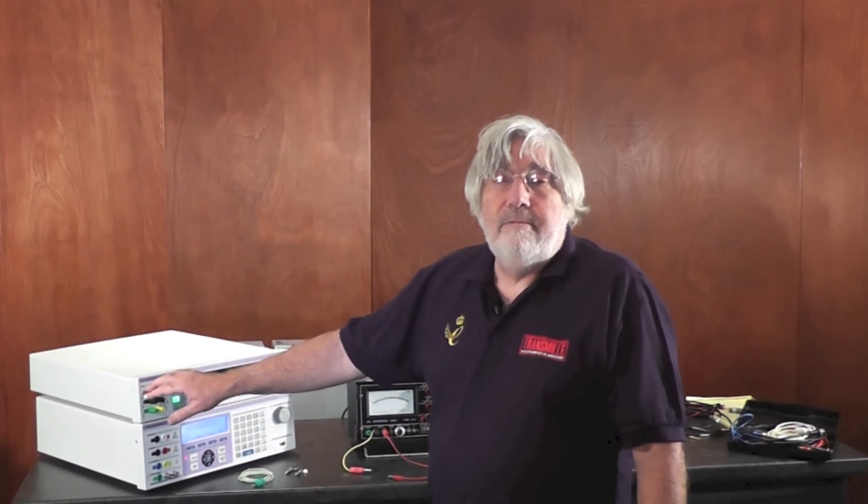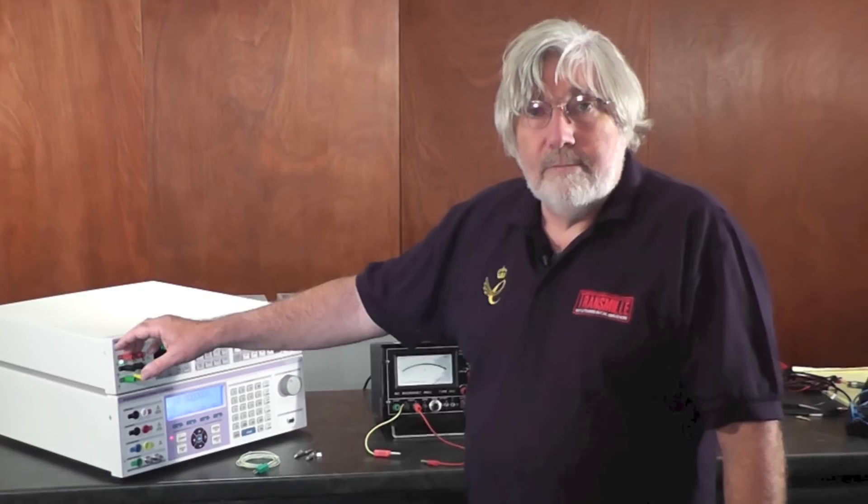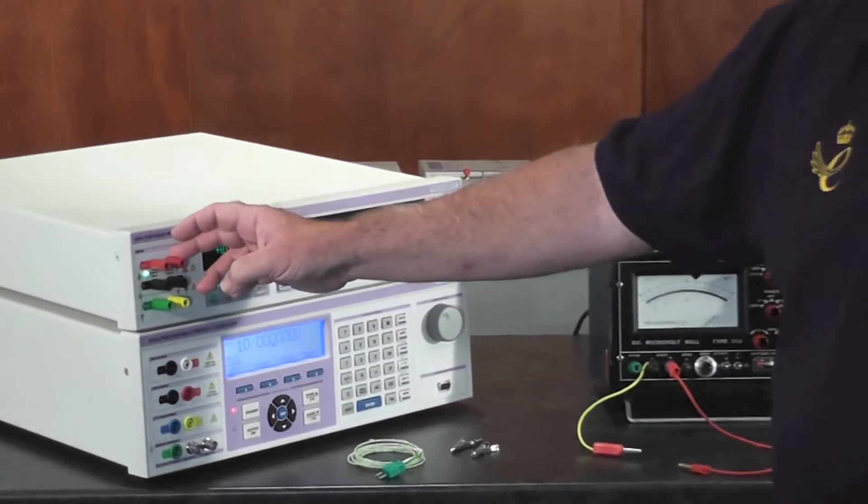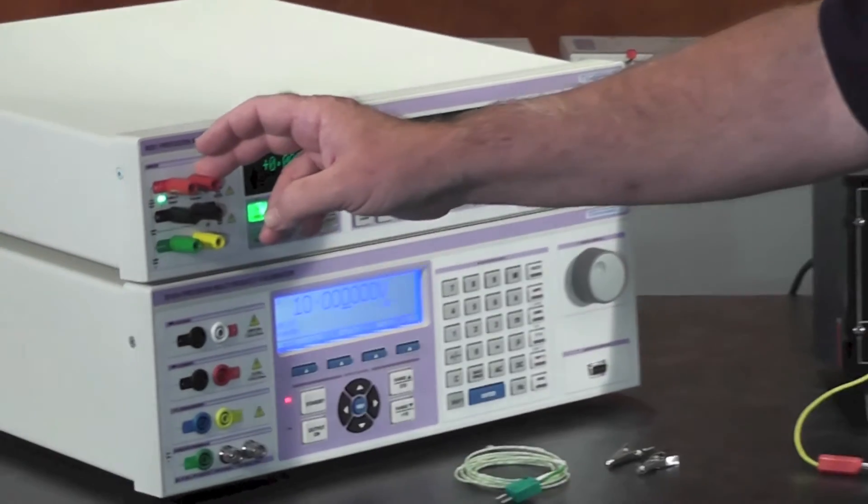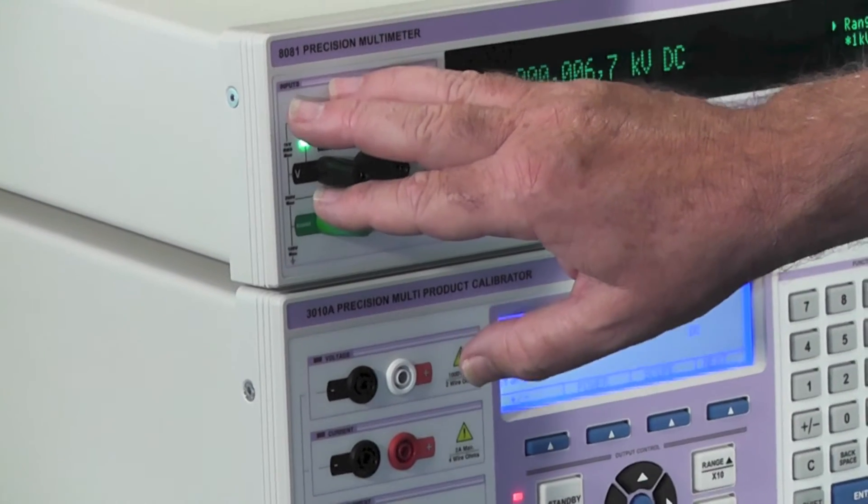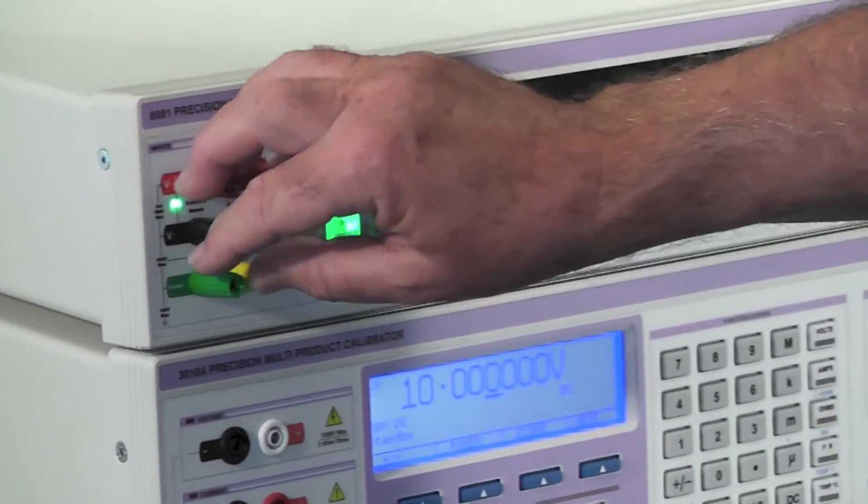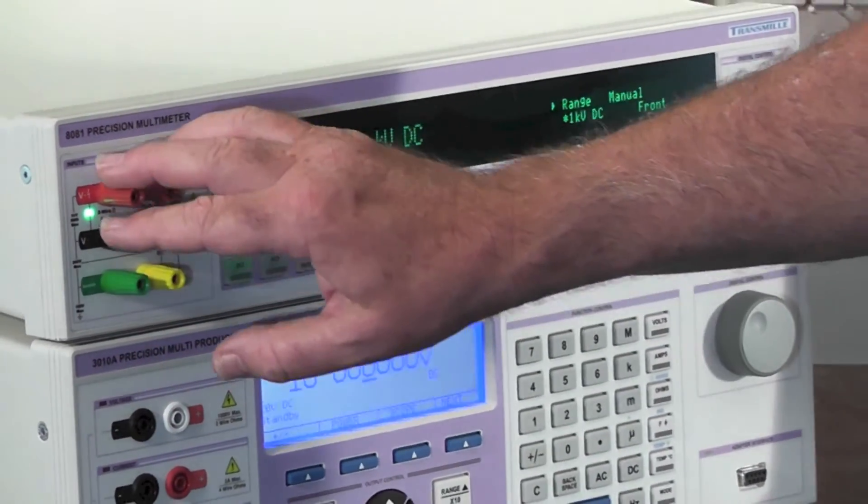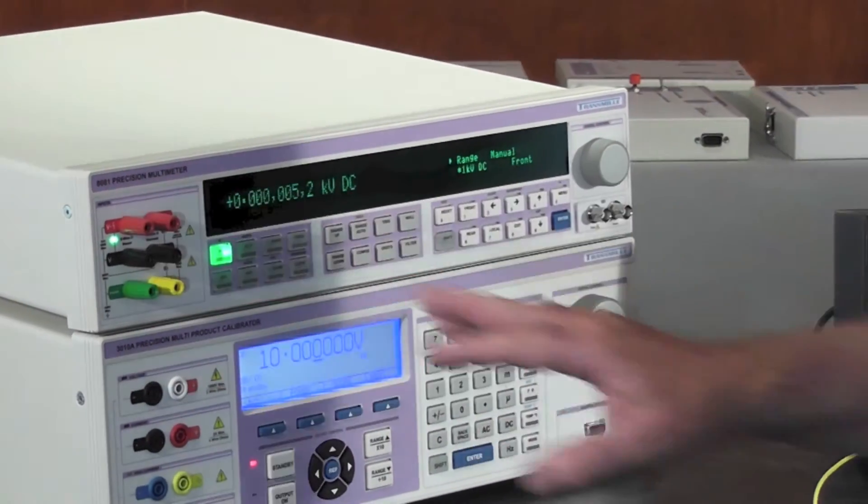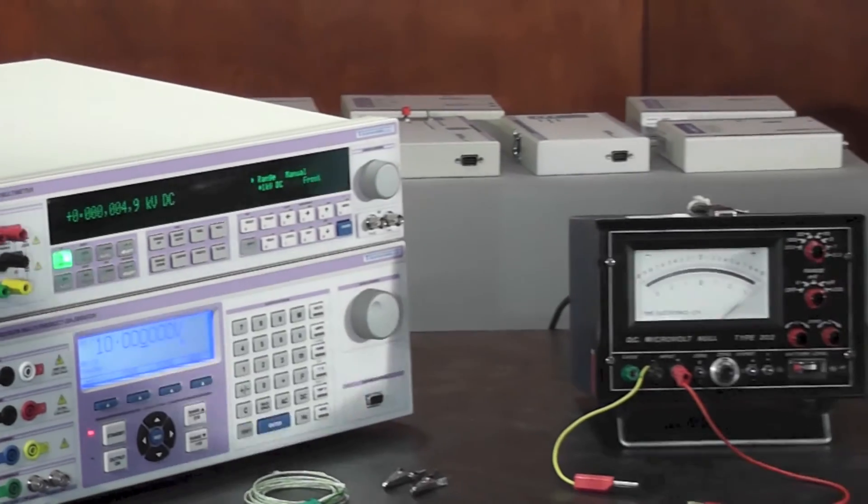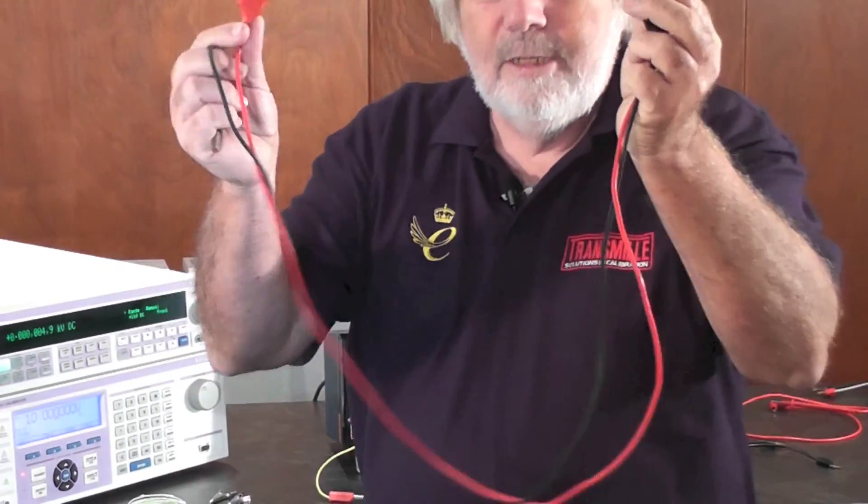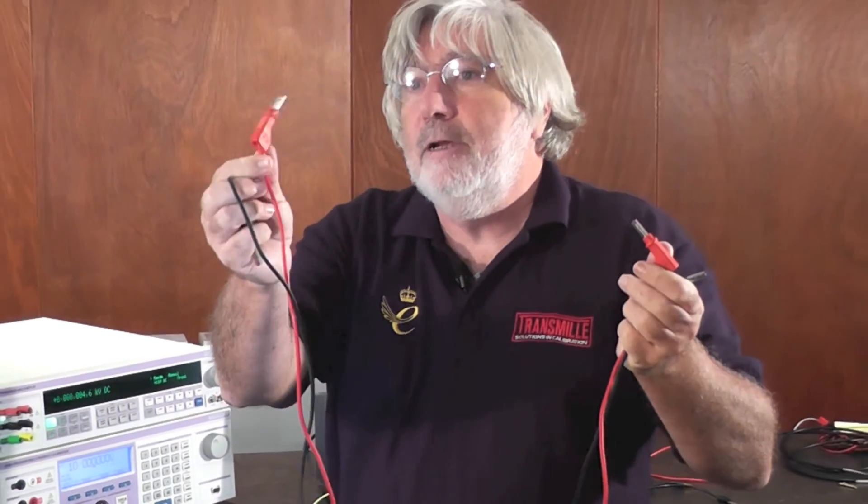All of the precision manufacturers, their instruments will have on them low thermal, usually copper or deoxygenated copper connections which are almost always gold plated. So whether you're looking at a precision calibrator or a precision multimeter, the terminals here will be good quality copper gold plated.